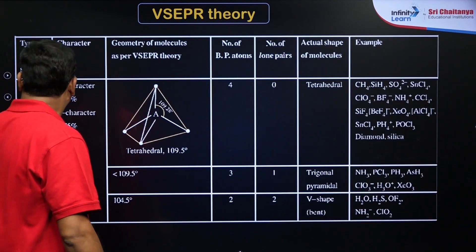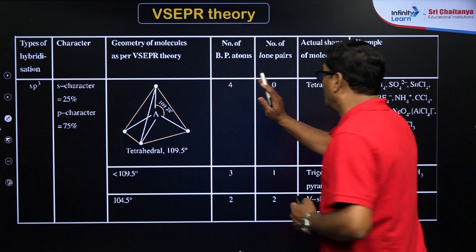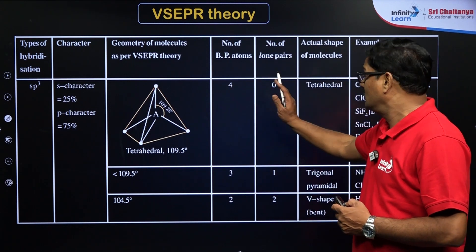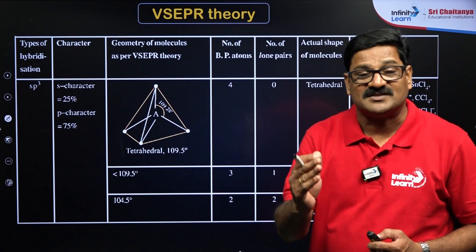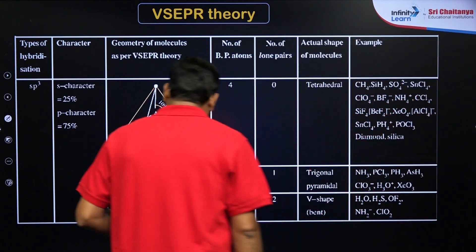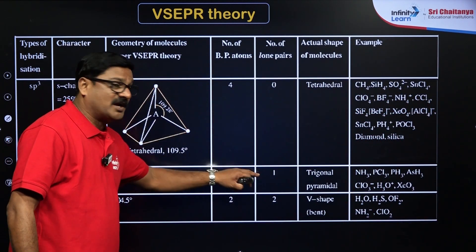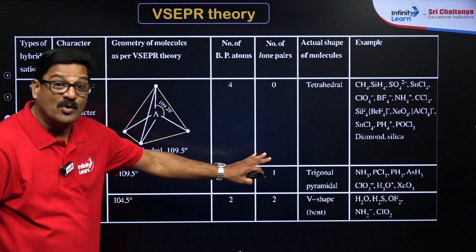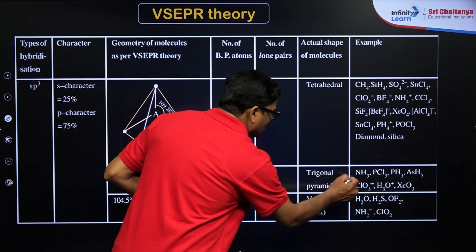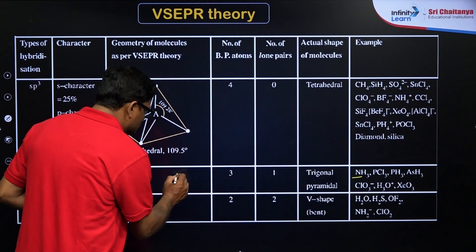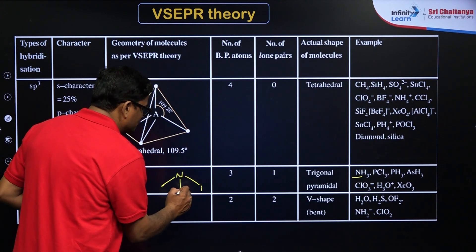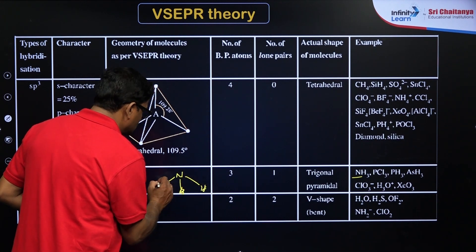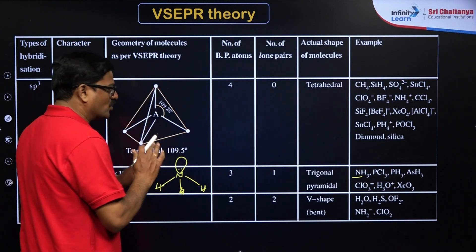And also you will be having SP3 with four bond pairs of electrons, zero lone pairs of electrons. It is going to have a tetrahedral. If it is three bond pairs and one lone pair, we can see, let's say ammonia, very popular. It is going to be nitrogen, three bond pairs: hydrogen, hydrogen, and hydrogen, and one lone pair of electron. So it is going to be trigonal pyramidal.